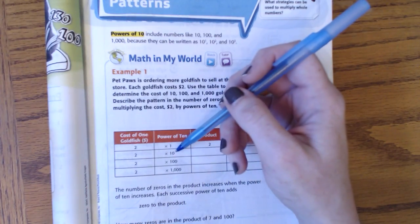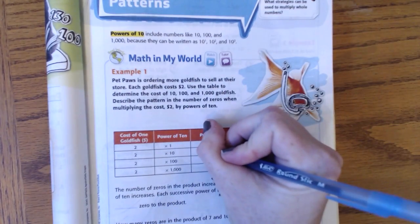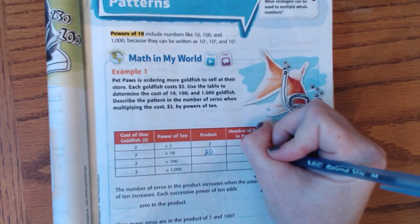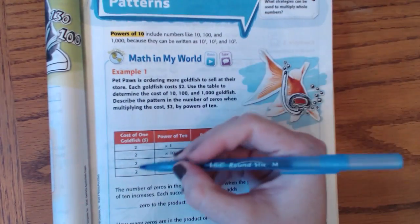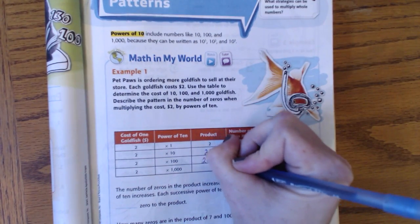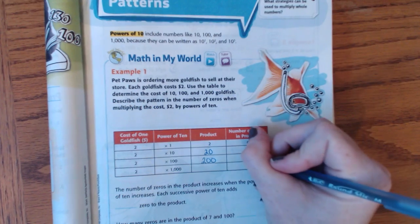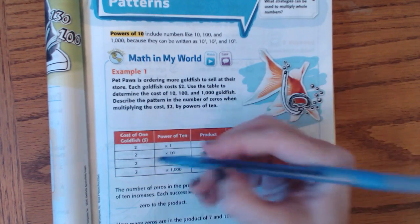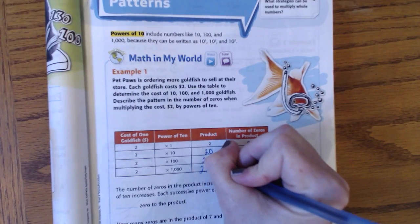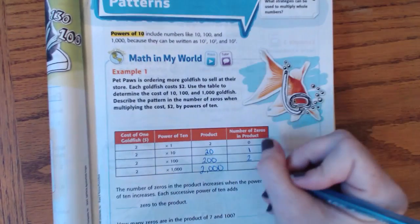What's 2 times 10? That's 20. How many zeros do you see? Well, I see 1. 2 times 100, what's that? It's 200. How many zeros? 2. And 2 times 1,000 is 2,000. How many zeros? 3.